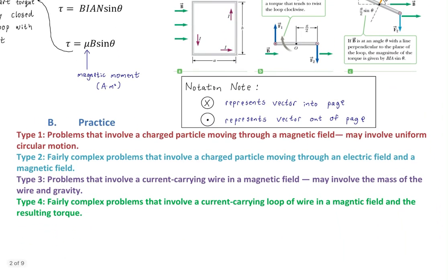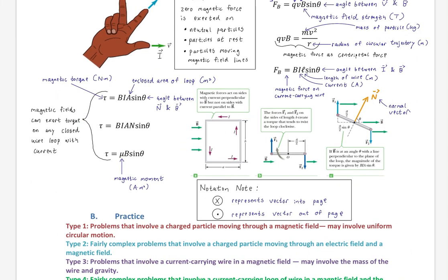We have four types of practice problems. Type one: problems involving a charged particle moving through a magnetic field, possibly involving uniform circular motion — because naturally the magnetic field force is a centripetal force. Type two: fairly complex problems involving a charged particle moving through both an electric field and a magnetic field. Type three: problems involving a current-carrying wire and a magnetic field, possibly involving the mass of the wire and gravity. Type four: fairly complex problems involving a current-carrying loop of wire in a magnetic field and the resulting torque.